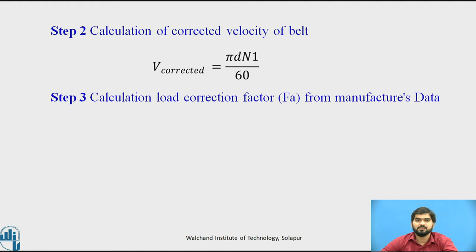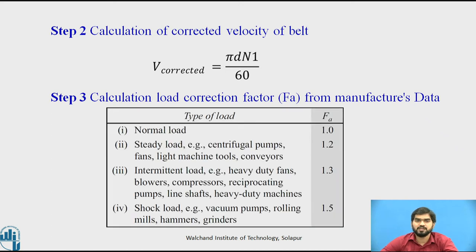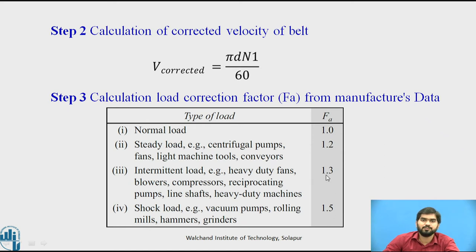Step number 3: calculation of load correction factor from the manufacturing data book, indicated by the letter FA. Depending on the application, we select the FA value. If the load is normal, FA = 1. For centrifugal pumps, fans, light machine tools, or conveyors, select FA = 1.2. For heavy duty fans and compressors, use FA = 1.3. If shock loads are present, FA = 1.5.